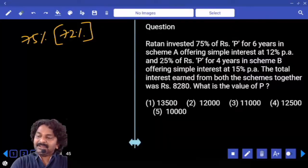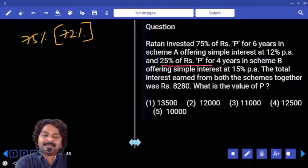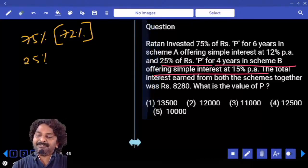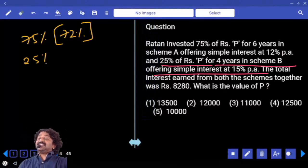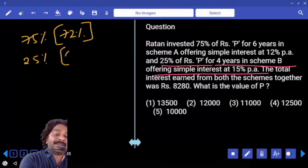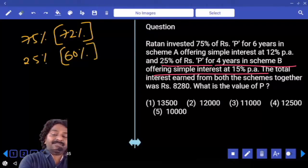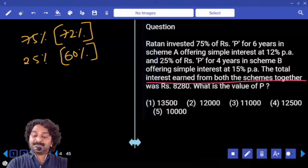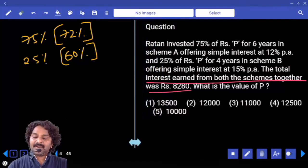Next, and 25% of P, that is 25% of P for 4 years in scheme B offering simple interest at 15% per annum. So what is interest obtained in 4 years? 60% of 25%, correct. The total interest earned from both the schemes together is 8280. What is the value of P?